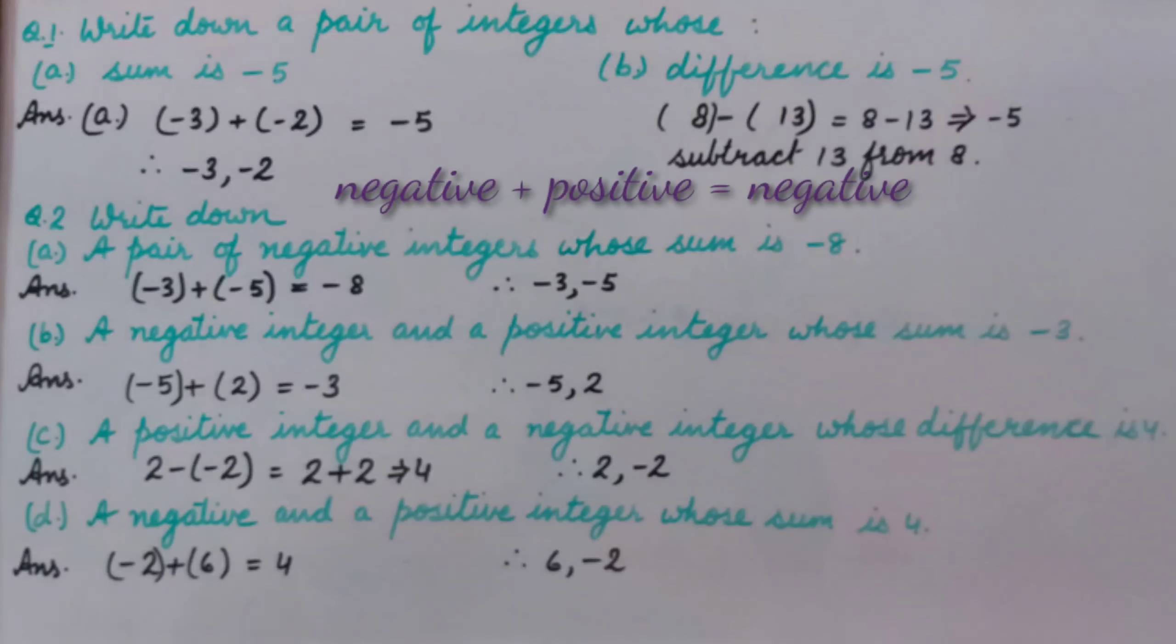We can take either one negative integer and one positive, or both negative integers, because the answer is negative. Here I have taken minus 3 and minus 2, whose sum is minus 5. You can take any other integers. This type of question can have multiple answers.